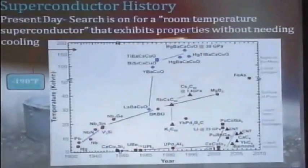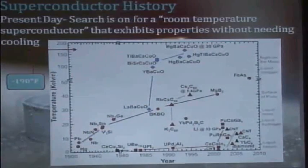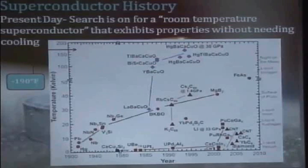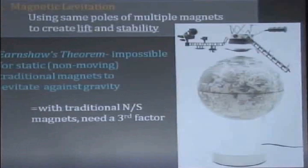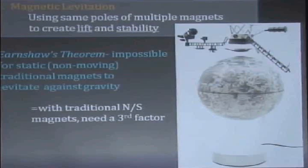This chart is very complex. All you need to understand from it is notice all the lines are trending upwards. You can see all the exotic combinations of elements that physicists are making right now to make superconductors. Now another idea that might be likely is magnetic levitation. So a man named Earnshaw came up with a theorem and it's correct. And it's impossible for traditional magnets to just nonstop levitate against gravity.